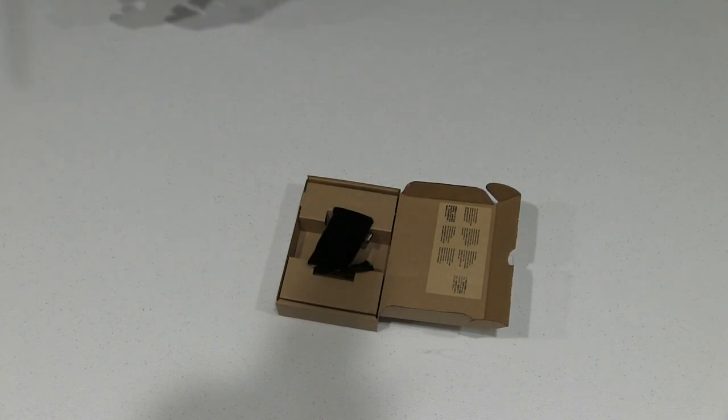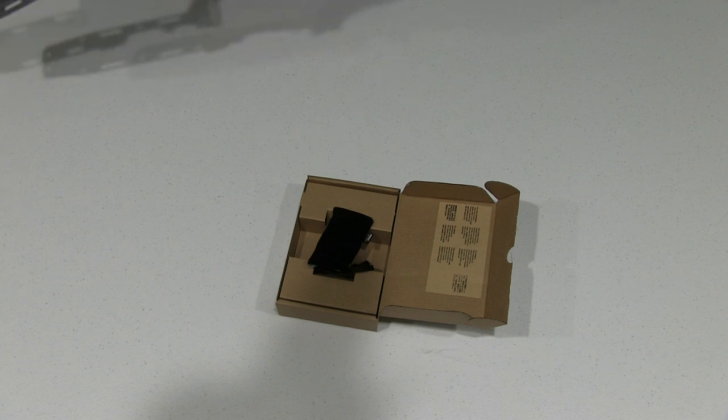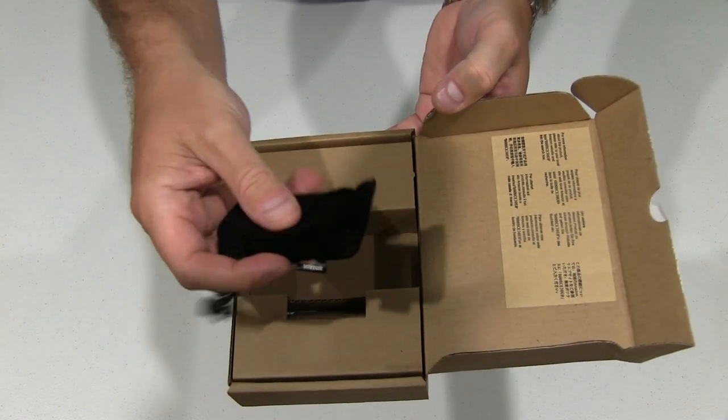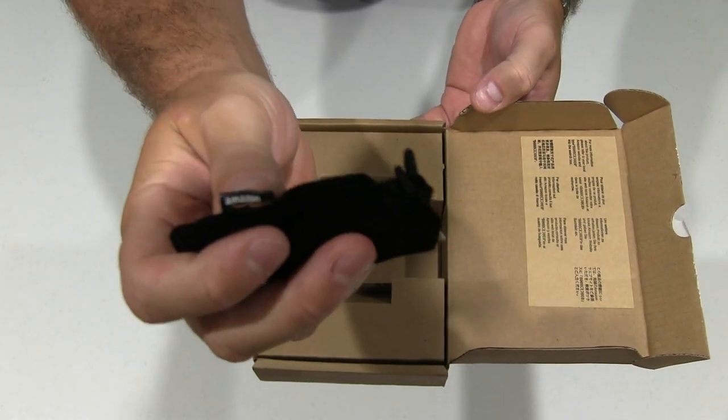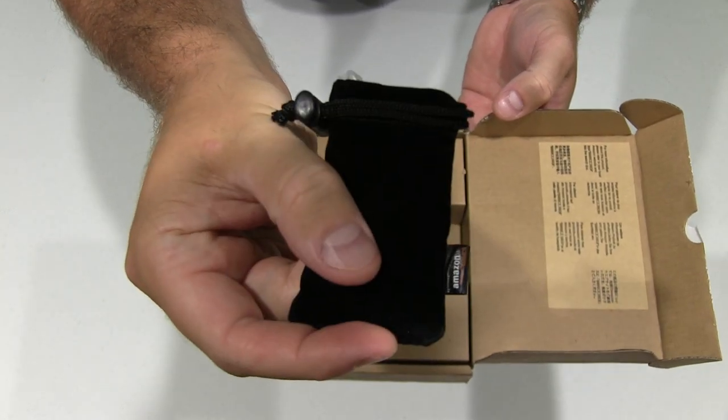Oh wow, the first thing I notice is the tactile feel of this little sack that it's in. I didn't expect to get that. At this price I was just expecting a bare remote. But look at that, it's got this little fuzzy sack. And it's even got the Amazon branding on it, it says Amazon Basics. How nice is that? And it says it on both sides.